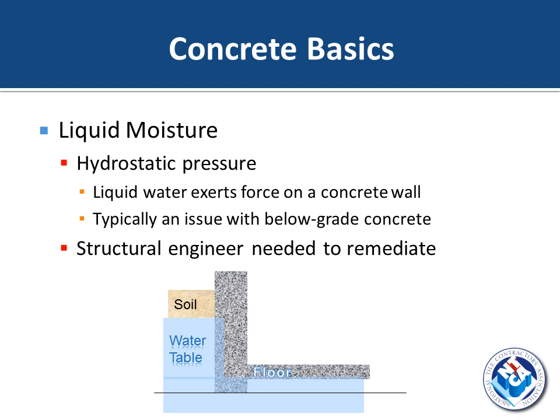The first type of moisture to deal with is liquid moisture, which causes hydrostatic pressure. Shown here is a diagram of flooring with a water table beneath it. This hydrostatic pressure is liquid water exerting force on a concrete wall — the pressure can be so great that actual liquid water travels through the slab and leads to flooring installation issues. This is typically an issue with below-grade concrete, such as in a basement. Factors like a rising water table, increased precipitation, grading changes, or flooding can arise before, during, or even years after an install.